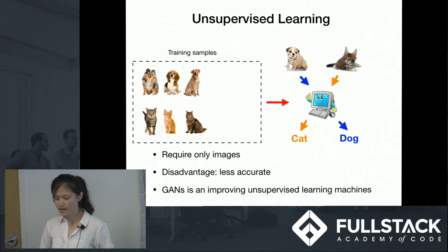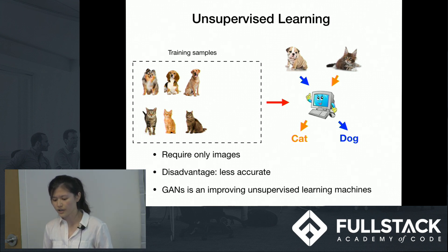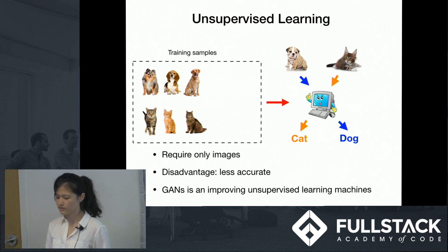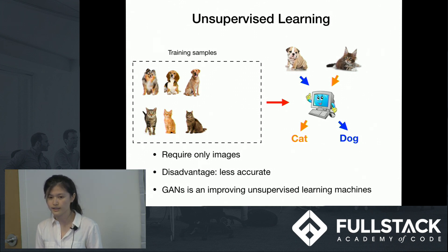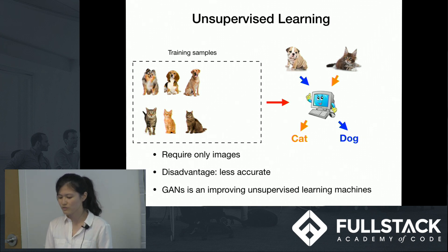Labeling large numbers of samples is costly and time-consuming. In unsupervised learning, a neural network doesn't have those luxury labels. They have to learn on the job as they go, learning from mistakes and trying not to make similar errors in the future. Unsupervised learners don't require a huge amount of human effort, but they tend to be less accurate. Naturally, there is a strong motivation to improve unsupervised machines and decrease the reliance on supervised ones. GANs can be viewed as an improved unsupervised learning machine.